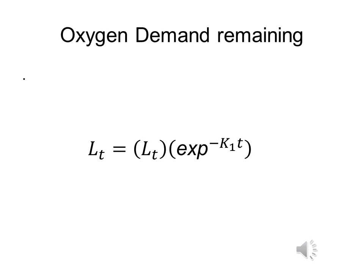DO sag curve, dissolved oxygen sag curve, is basically after taking away D, oxygen deficit, from DO, dissolved oxygen saturate, and graphing with respect to either time or distance. The sag in the curve is the critical deficit or the critical dissolved oxygen point on the curve.